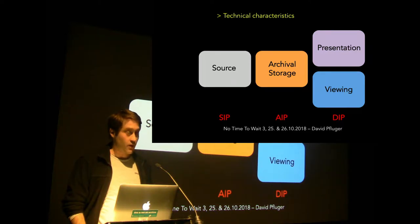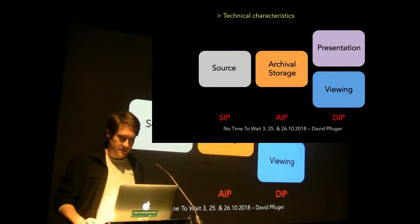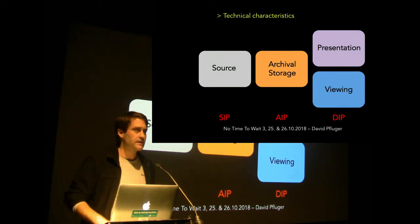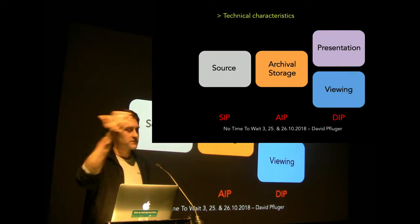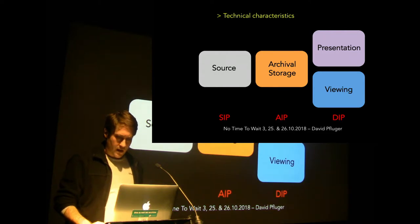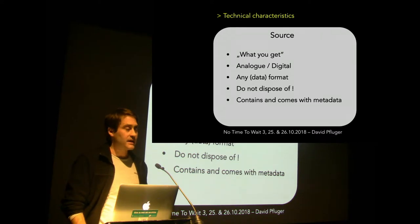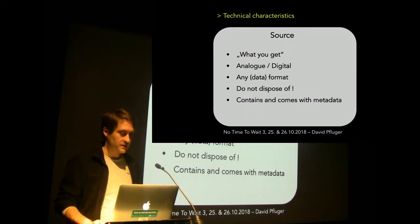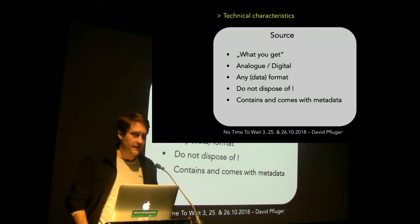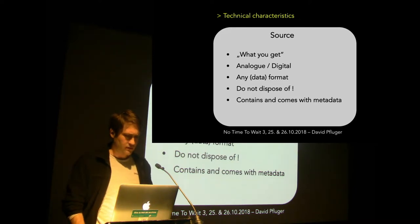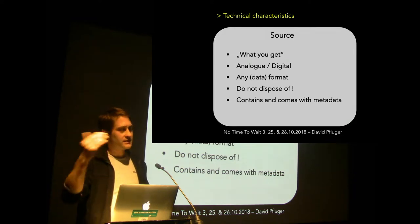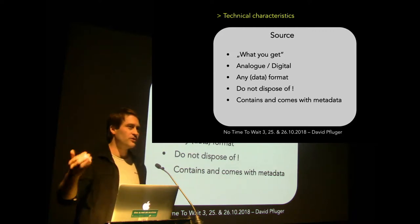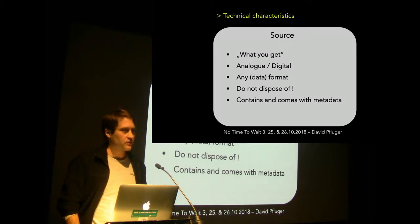If you're into OAIS, here are the terms. Martin Wrigley pointed out more or less in yesterday's talk a few of the steps on how to go from the sourcing to the AIP. Looking at the source, it can be analog or digital, any data format, and you shouldn't dispose of it. It comes with metadata. Lars Gaustart talked of the full payload — the idea is to get into the digital domain when digitizing the full amount of information, not only the image or sound, but also a lot of meta information.